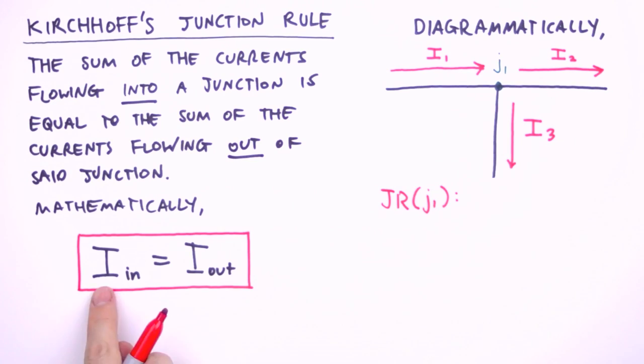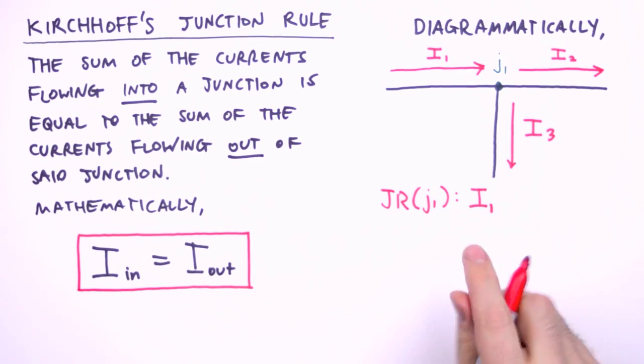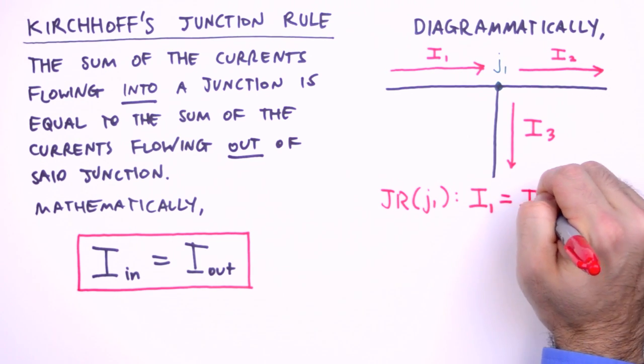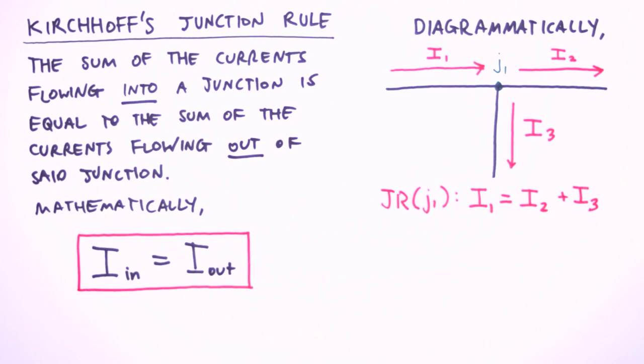So applying the junction rule to J1, we have current in, that's just I1, equals current out, which is I2 plus I3. And that's it. That's how the junction rule is applied to a junction.